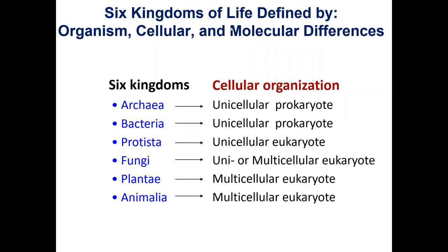Biologists also classify life into six kingdoms. Multicellular eukaryotes are Animalia; plants form another kingdom; fungi are uni- and multicellular eukaryotic organisms; and so on.